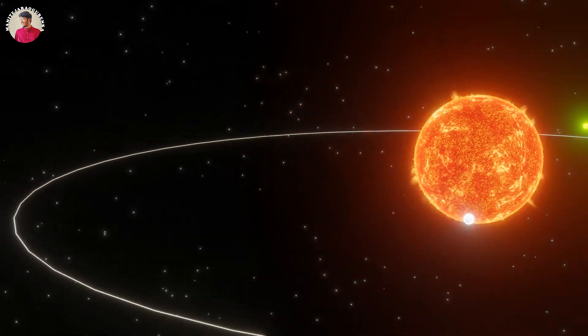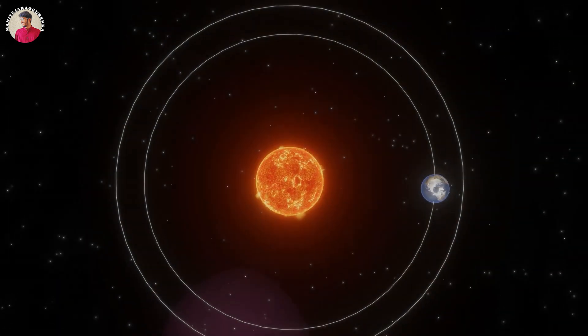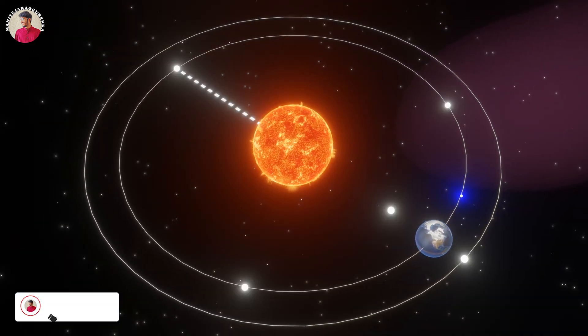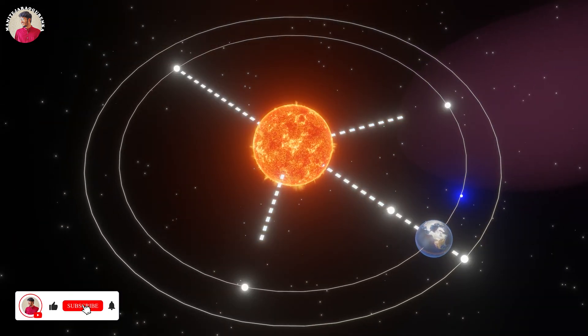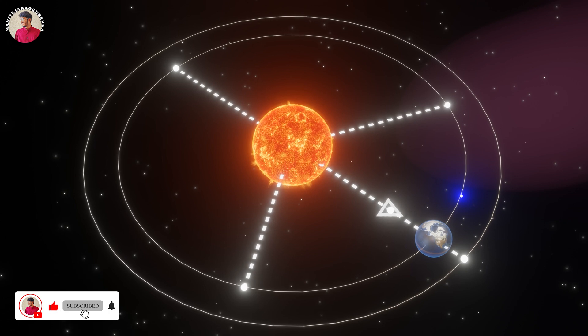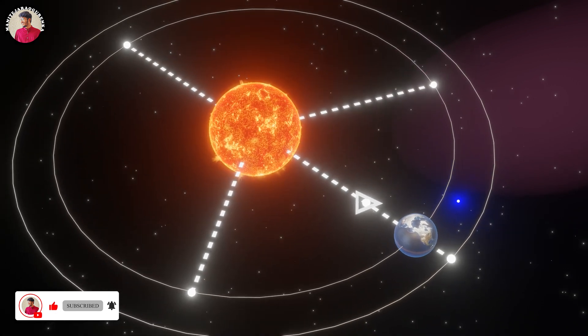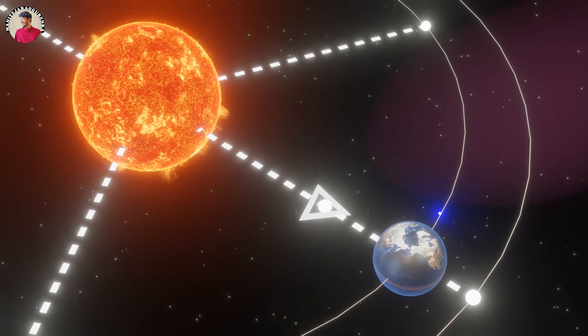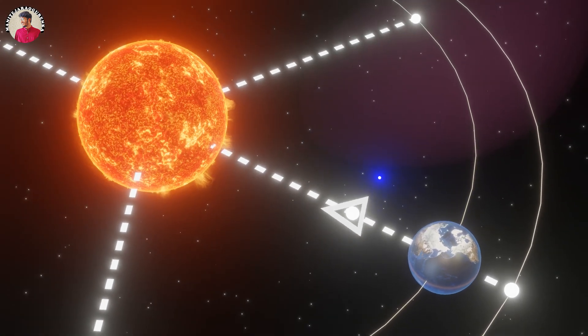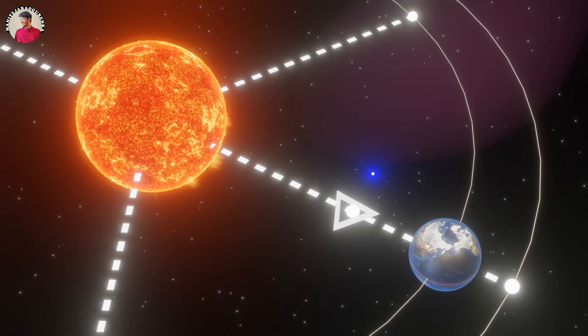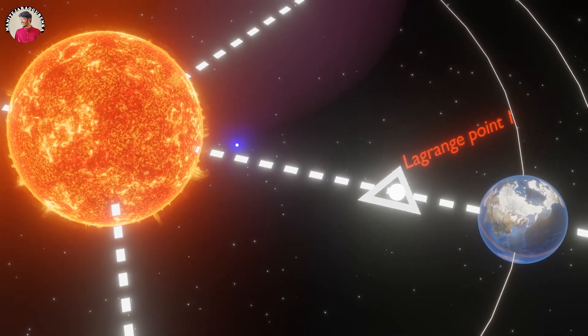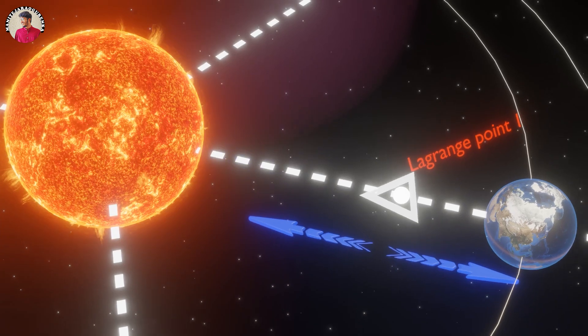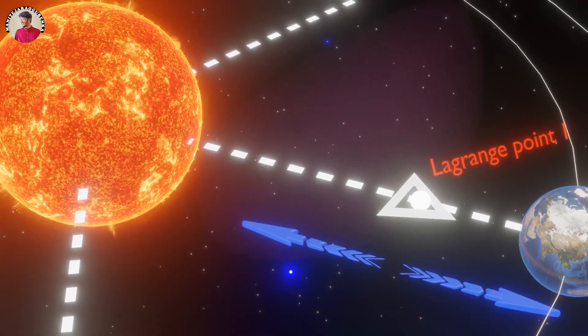Let's understand the Lagrange Point 1. For a two-body gravitational system, the Lagrange points are the positions in space where a small object tends to stay if put there. These points in space for a two-body system, such as the Sun and Earth, can be used by spacecraft to remain at these positions with reduced fuel consumption. Technically, at Lagrange Point 1, the gravitational pull of the two large bodies equals the necessary centripetal force required for a small object to move with them.